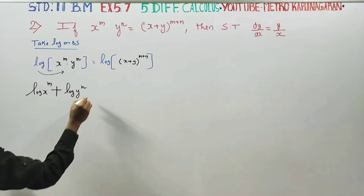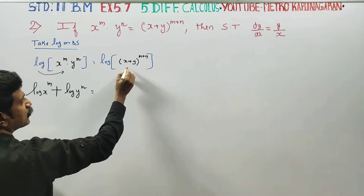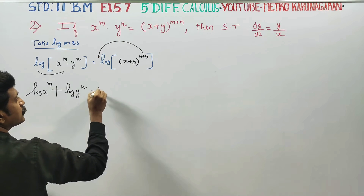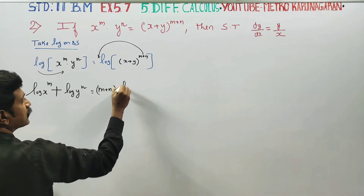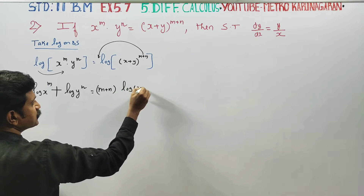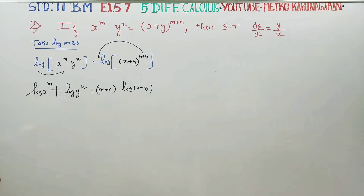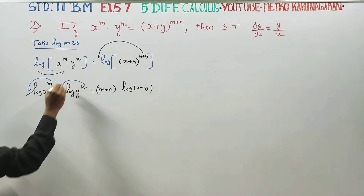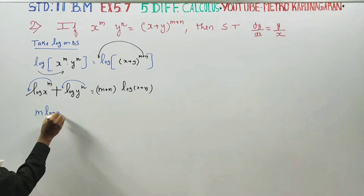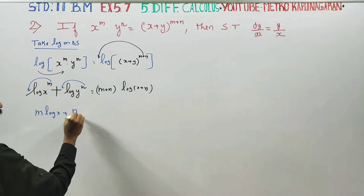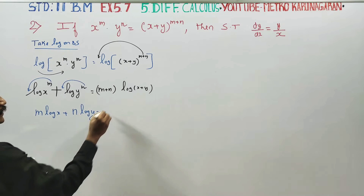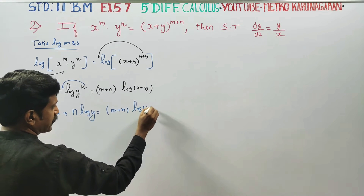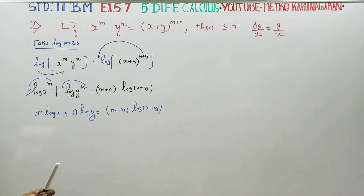Log of y power n. Applying the power rule: n log y. So the LHS becomes m log x plus n log y, and the RHS is m plus n into log of x plus y.